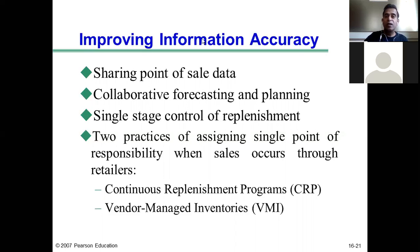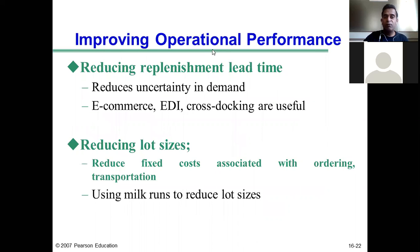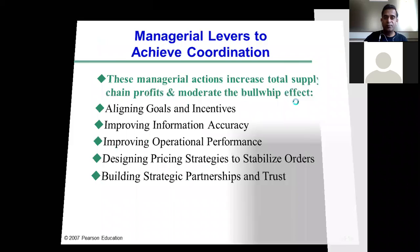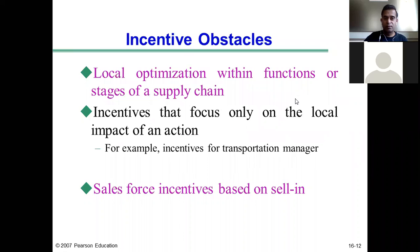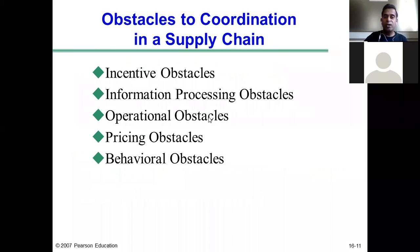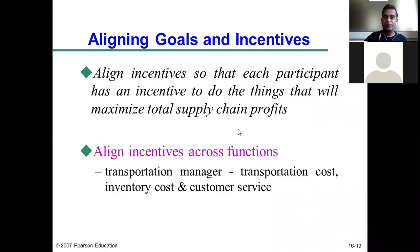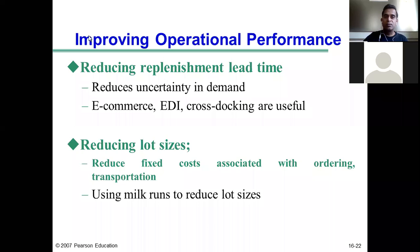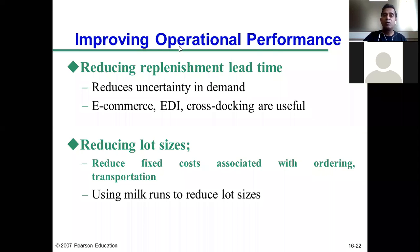The third managerial lever is improving operational performance. This strategy helps a company overcome operational obstacles and improve operational performance in the supply chain. The first aspect here is reducing the replenishment lead time — the time taken to fulfill a customer order. By reducing the replenishment lead time, the company can achieve key advantages.